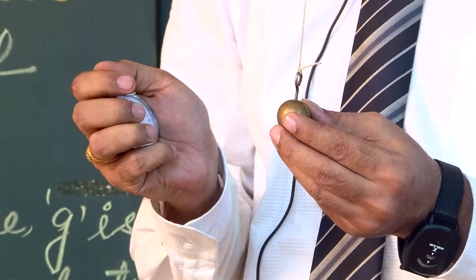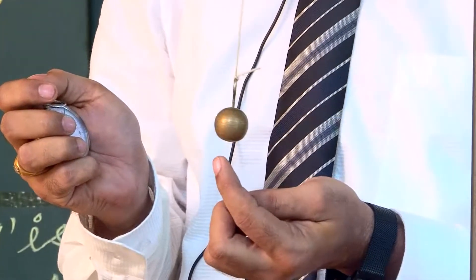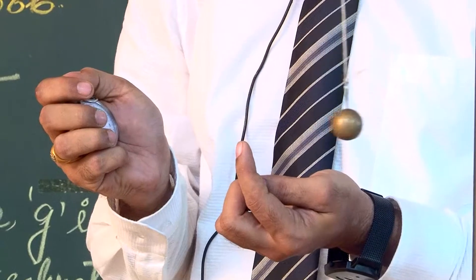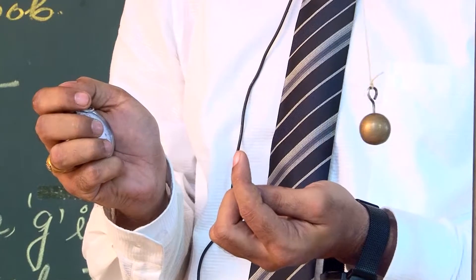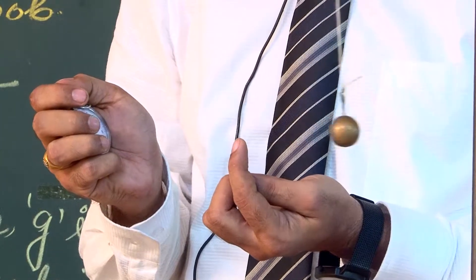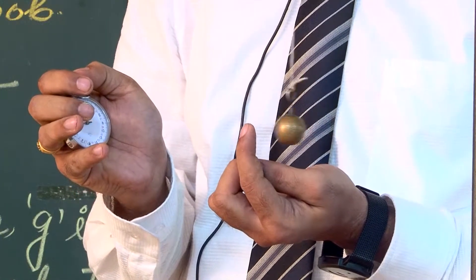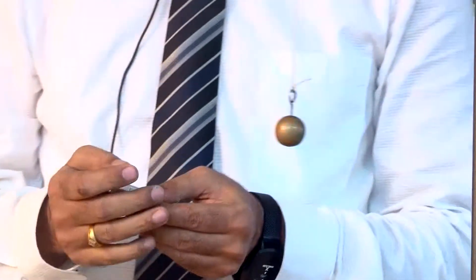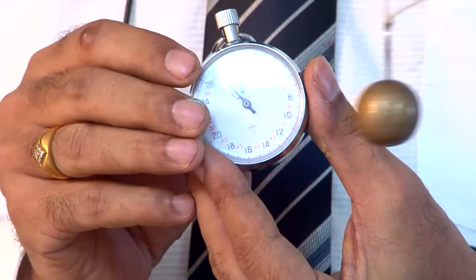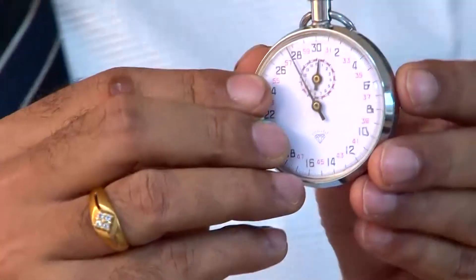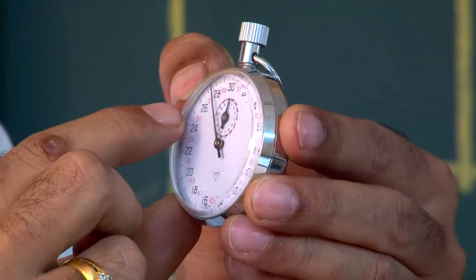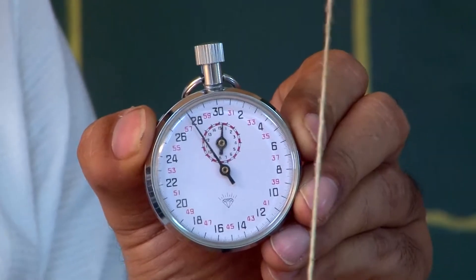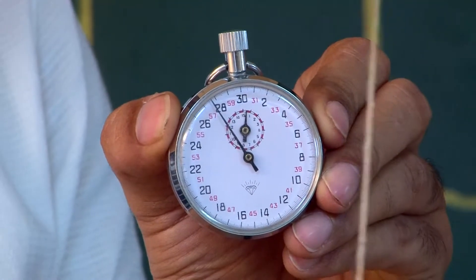Once released, we start the stopwatch and count 20 oscillations: 1, 2, 3 ... 20. The time taken to complete 20 oscillations is 27.5 seconds. We have to repeat the same procedure two more times for better accuracy, and then we can vary the length and repeat.